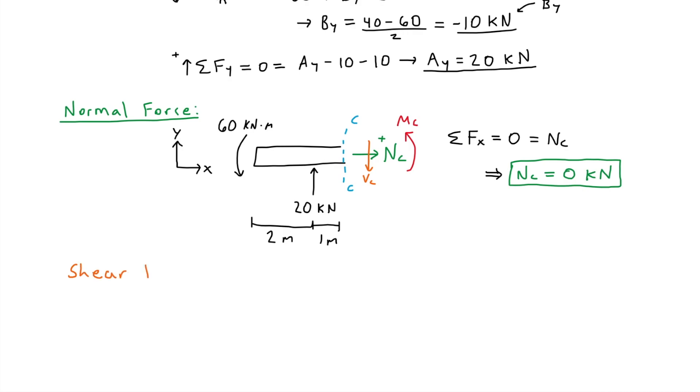Now, moving on to shear force. I'll be using the same diagram I drew above. Here, we're now looking for Vc, which acts in the vertical direction. We'll be setting the sum of forces in the Y direction equal to 0 to solve for Vc. We have the 20 kilonewton force, and then minus the Vc. Hence, the shear force Vc equals 20 kilonewtons.